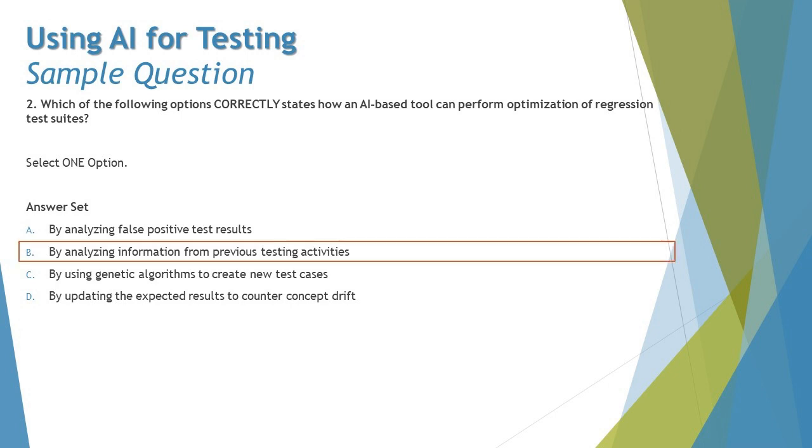Being very straightforward, the right answer here is B: by analyzing information from previous testing activities. This is the right answer because we need to have the past data to let the AI system learn about it, what is the pattern of your executions and what executions have resulted in great identification of defects or what are more important to be performed.